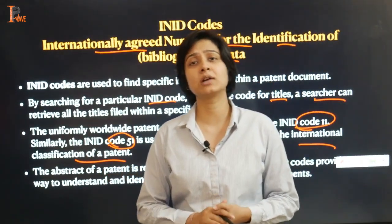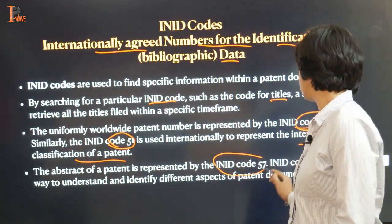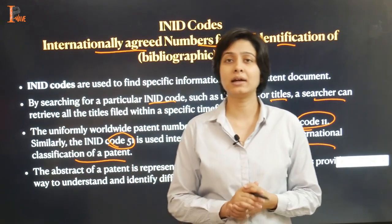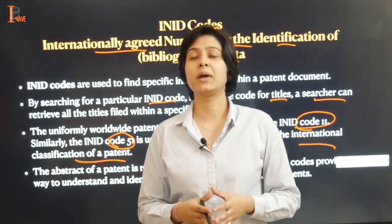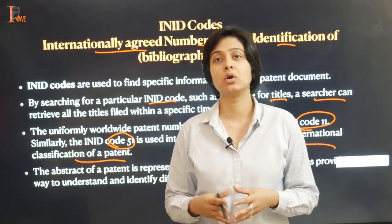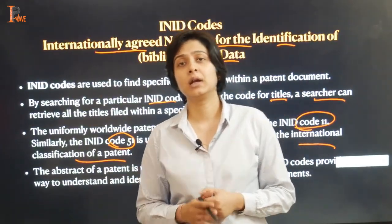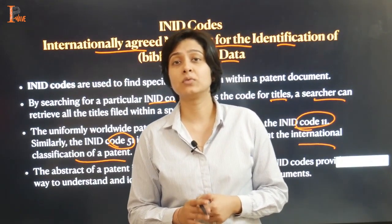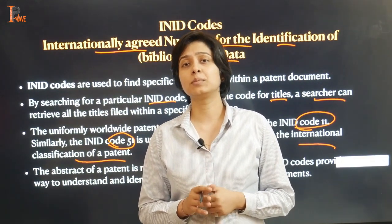The abstract of a patent is represented by INID code 57. INID codes provide a way to understand and identify different aspects of a patent document. Different patent offices may have slight variations in the presentation of patent data, but they generally follow a uniform pattern. It is important for searchers to familiarize themselves with these variations when conducting searches or analyzing patent documents.